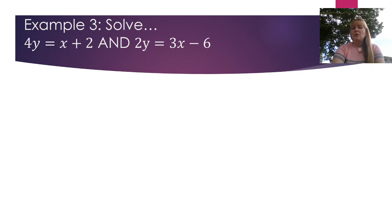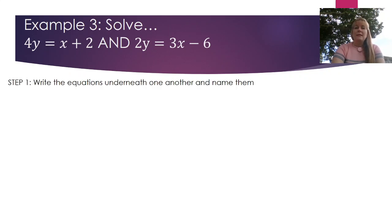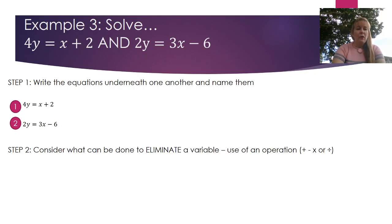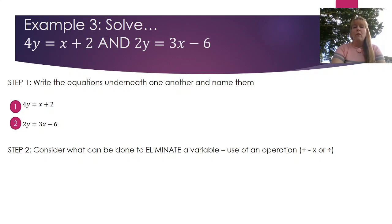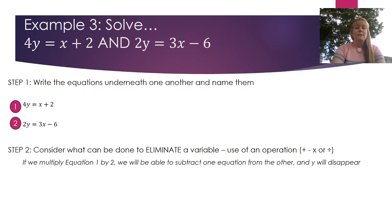The last example uses the multiplication operator. We write the equations one on top of the other, naming them equation 1 and equation 2. Straight away I can see that adding or subtracting won't eliminate anything. Dividing won't help either, but I could multiply one equation by a factor on both sides. If I multiply equation 2 by 2, I'll be able to subtract one equation from the other and the y terms will disappear.